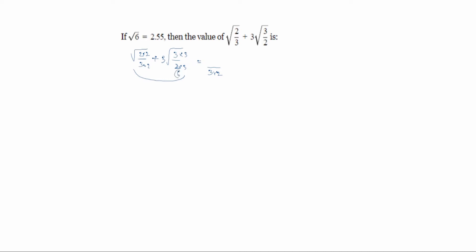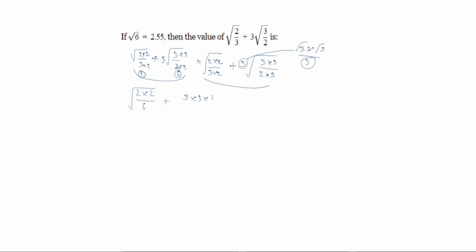Both denominators become 6. So we get: root of (2 × 2) divided by 6, plus root of (3 × 3 × 3) divided by (2 × 3). Now, root 3 into root 3 is equal to 3. So we have 3 into 3 in the numerator of the second term, divided by root of 6.